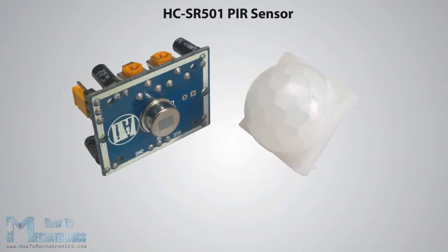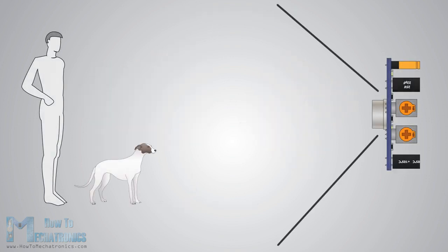First, let's explain the working principle. The module actually consists of a pyroelectric sensor, which generates energy when exposed to heat. That means when a human or animal body gets in the range of the sensor, it will detect movement because the human or animal body emits heat energy in a form of infrared radiation.